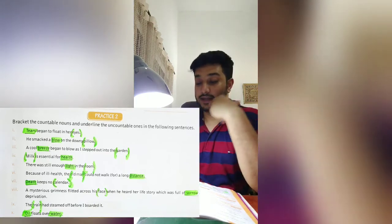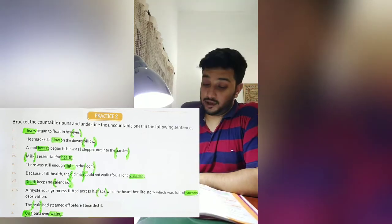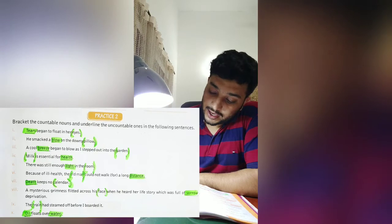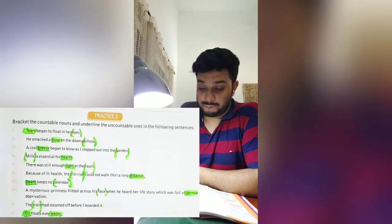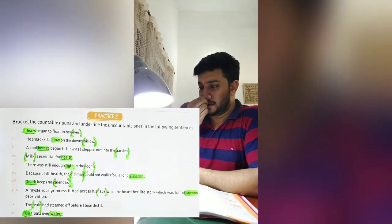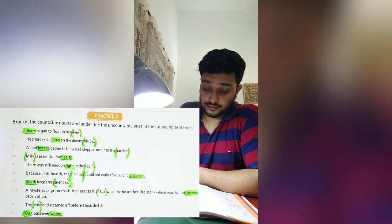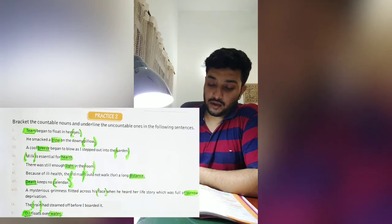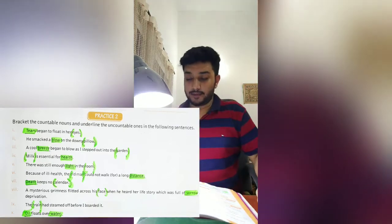Tears is uncountable, so I am highlighting it on your screen, and I am bracketing the countable noun which is eyes. Next sentence: 'He smacked the blow on the downy pillow' — blow means to hit or strike something. Blow here is an uncountable noun, so I am highlighting it, and I am bracketing the countable noun pillow.